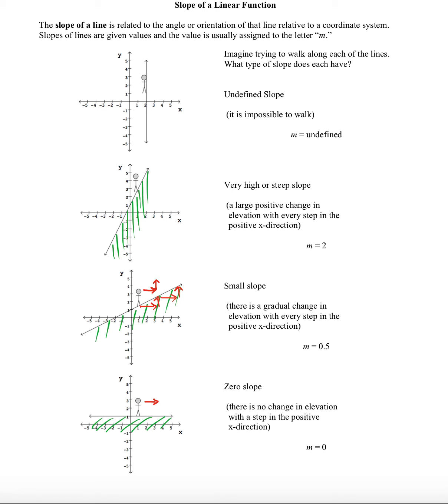We see that we'd have to have a large positive change in elevation with every step in the positive x direction. So the person goes over and they're going to have to go up quite a bit, quite a bit more than they did in this example down here. And we see that the m value, the slope, is larger. It's 2, as opposed to 0.5.